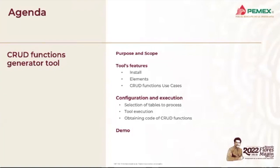The CRUD Functions Generator Tool agenda considers the following aspects: first, purpose and scope; second, we will focus on the tool features — install, elements, and use cases; third, we will describe the configuration and execution procedures; and finally we are going to have a demo. You will probably receive by email a zip file called webinar.zip with a user guide, install script, and file samples of the tool for your evaluation. So let's begin.